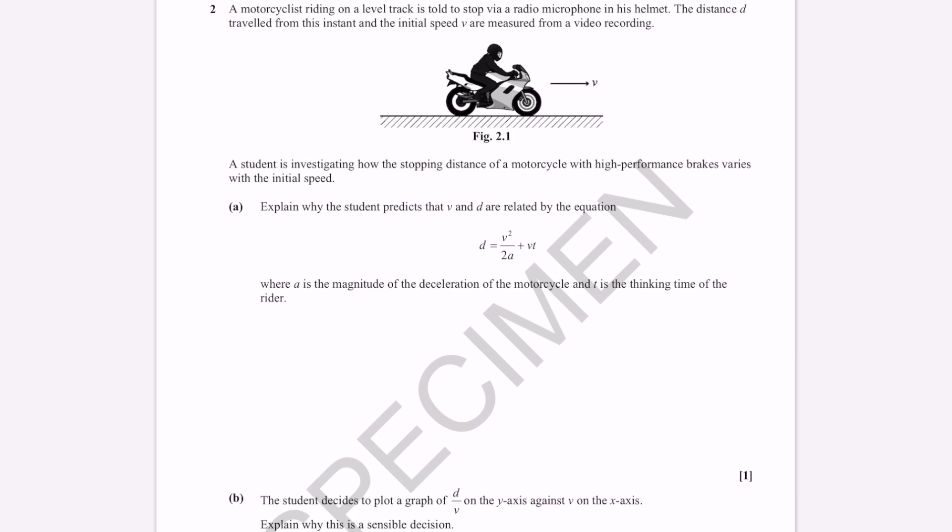Let's do an A-level physics paper 3 practice question. A motorcyclist riding on a level track is told to stop via a radio microphone in his helmet. The distance d traveled from this instant and the initial speed v are measured from a video recording. Explain why a student predicts that v and d are related by this equation.